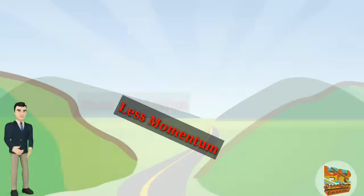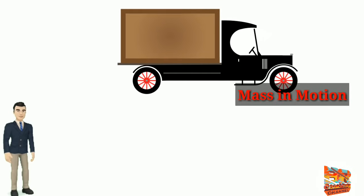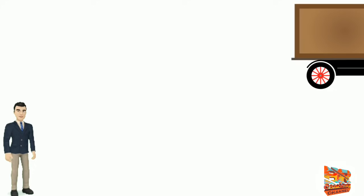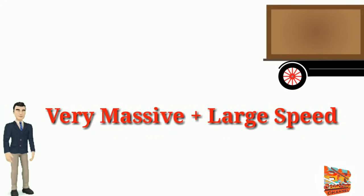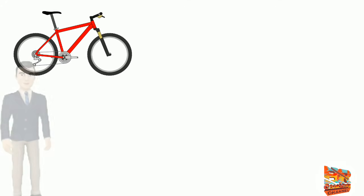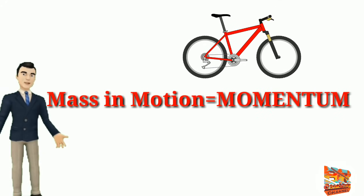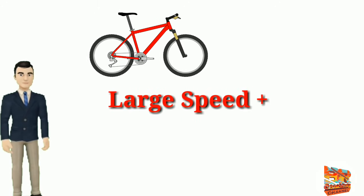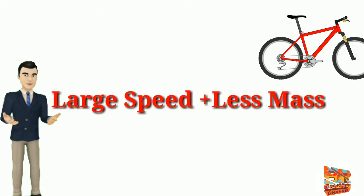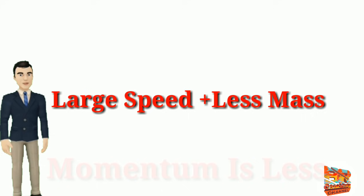Momentum simply means mass in motion. The semi-truck has a large momentum because it is very massive, but it also has a large speed, which influences momentum as well. The bicycle also has momentum because it has a large speed, but because its mass is less than that of the truck, its momentum is also less.